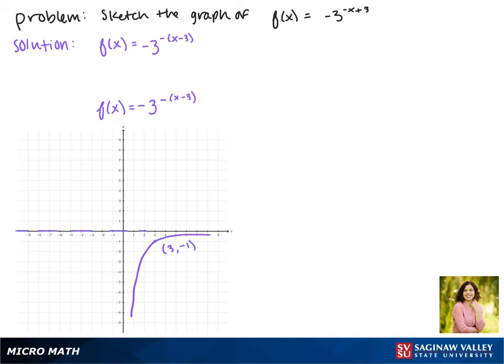And notice that our asymptote didn't shift up or down. The asymptote is still at y equals 0, and this is the graph of our function.